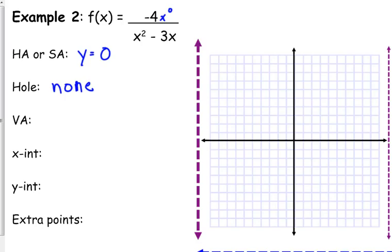So, vertical asymptote, we set the simplified denominator equal to zero. Well, the denominator didn't get simplified. I am going to factor it here.